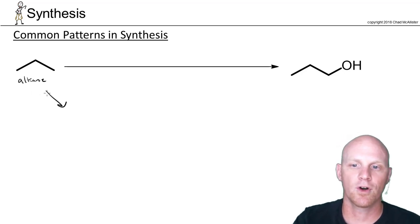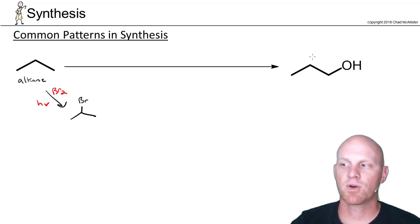That way it's very selective. It'll put a bromine in place of a hydrogen, a substitution reaction on the more substituted carbon, and we'll get here. But the question is, how do we make this product? And this is where we're going to start working this backwards. To make an alcohol, I can make an alcohol from an alkyl halide.